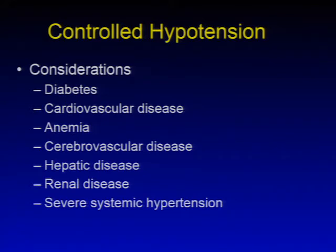Considerations for controlled hypotension may also play a role with the patient risk factors. One must consider the risk benefits of controlled hypotension in patients with diabetes, cardiovascular disease, anemia, cerebrovascular disease, hepatic disease, renal disease, or severe systemic hypertension.